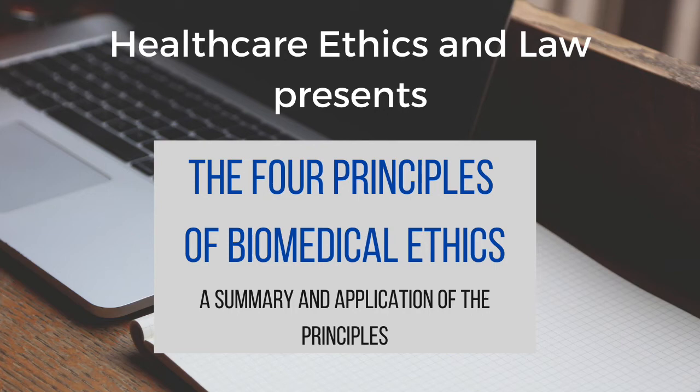Feinberg reflects this in his definition of autonomy, referring to it as self-rule, and Kant refers to it as self-legislation. Philosopher Gerald Dworkin looks at autonomy from a more functional perspective — it's actually a capacity that we possess, a second-order ability to reflect on first-order desires. So for example, I may have a first-order desire to eat some cake. I may be at a cafe and think, oh, I'd like to eat that, it looks delicious.